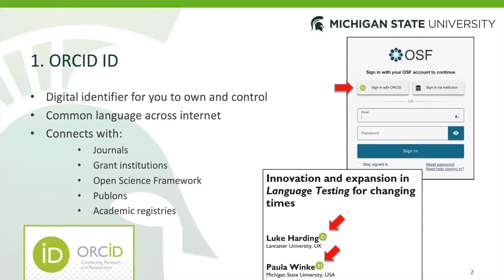The great thing about ORCID IDs is that it connects with journals, grant institutions, the Open Science Framework, Publons, and academic registries. Here on the screen I've got a couple of examples. With the Open Science Framework, you can actually log in and create your own account with your ORCID ID without having to create a separate account, which is really handy. It's also used in publications — here at the bottom we see Paula and Luke's recent editorial, and you can see their ORCID IDs are tied to their names in the manuscript. If you hover over the ID, you can find more information about them and their other publications.